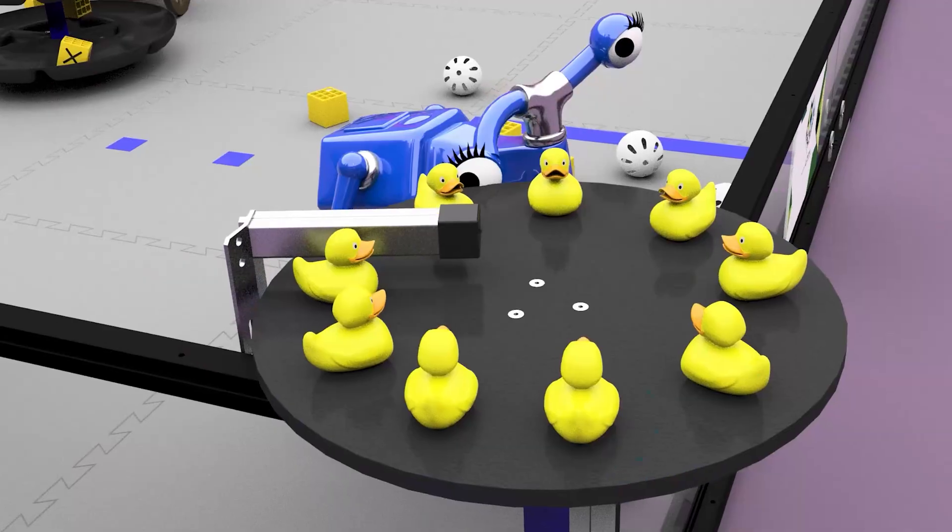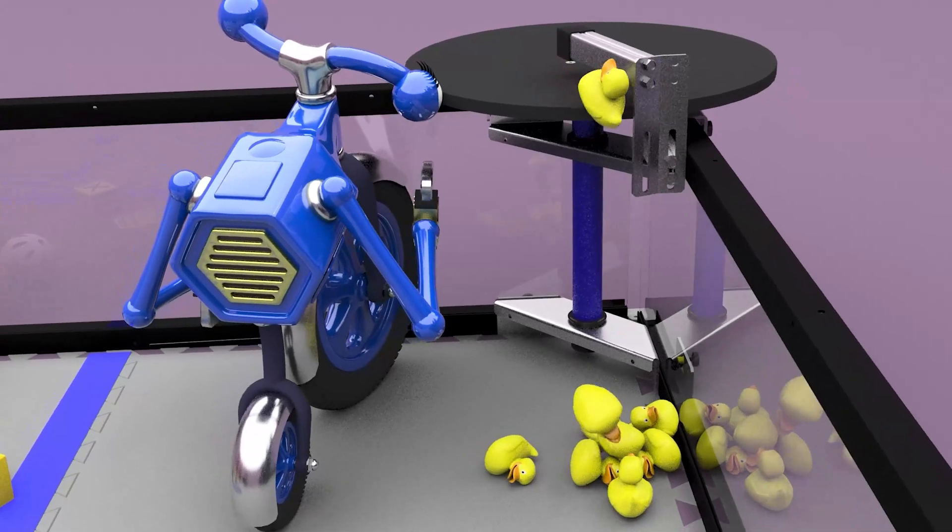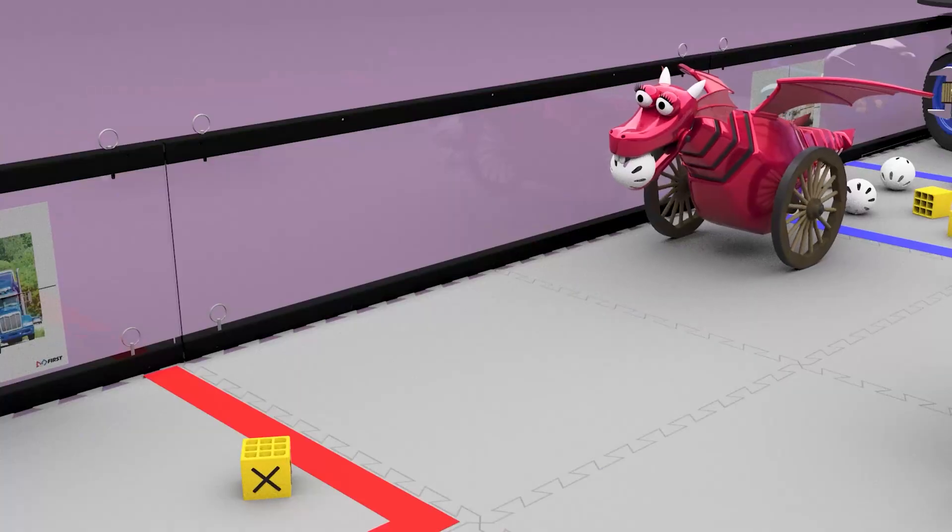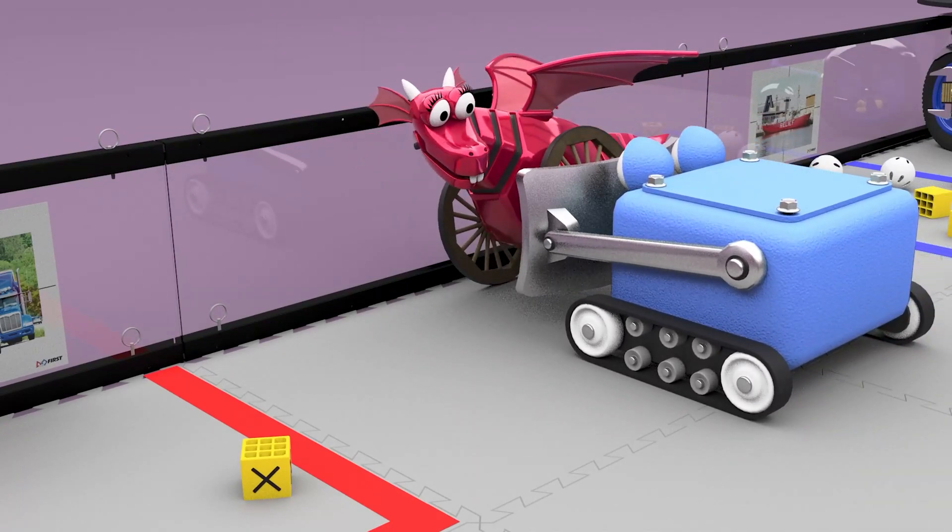Only one duck or team shipping element is allowed on the carousel at a time. A robot may not cause an opposing alliance robot to become pinned, trapped, or blocked.